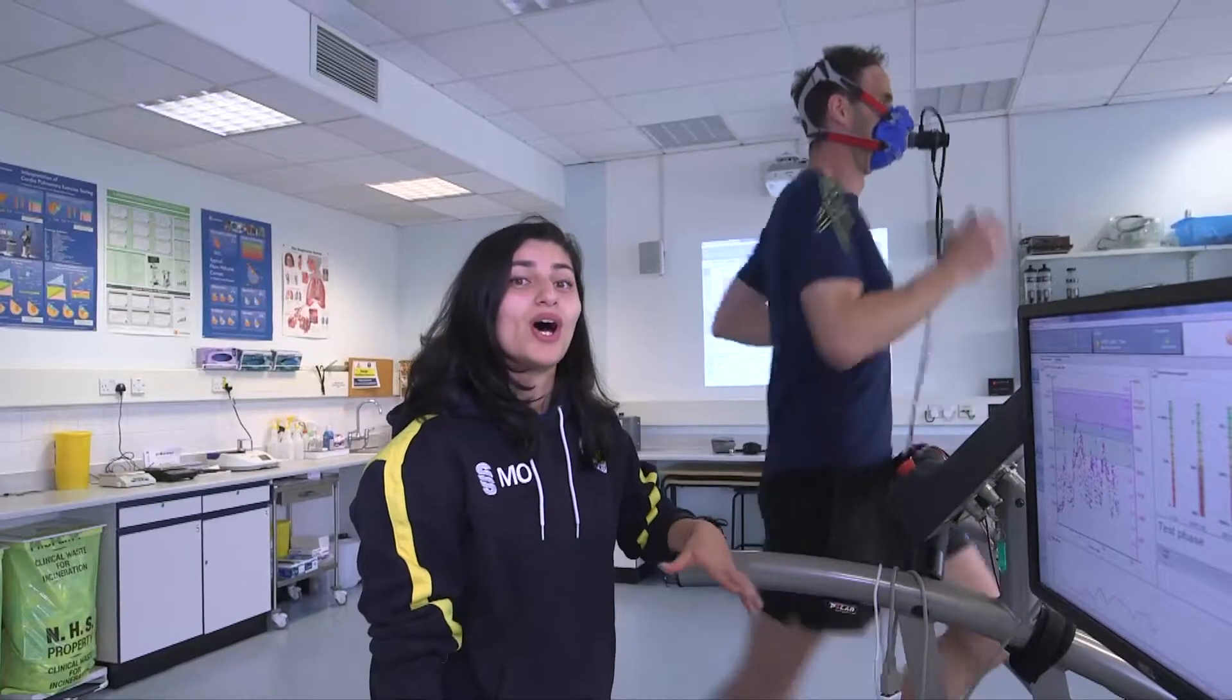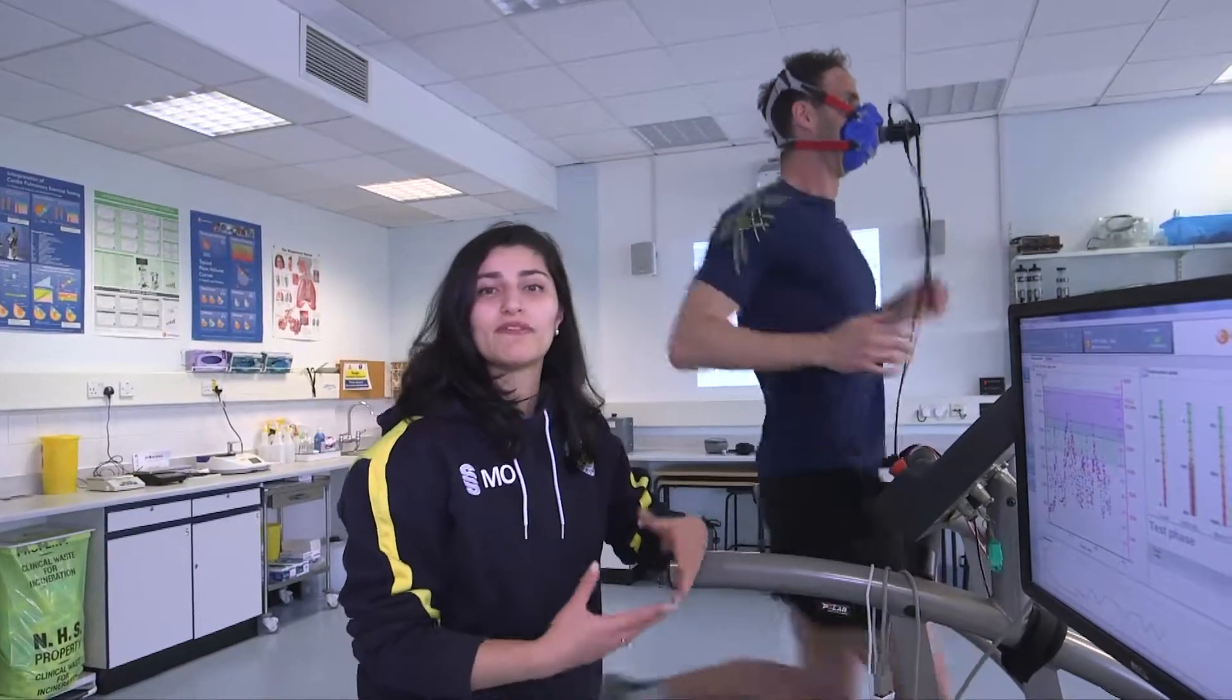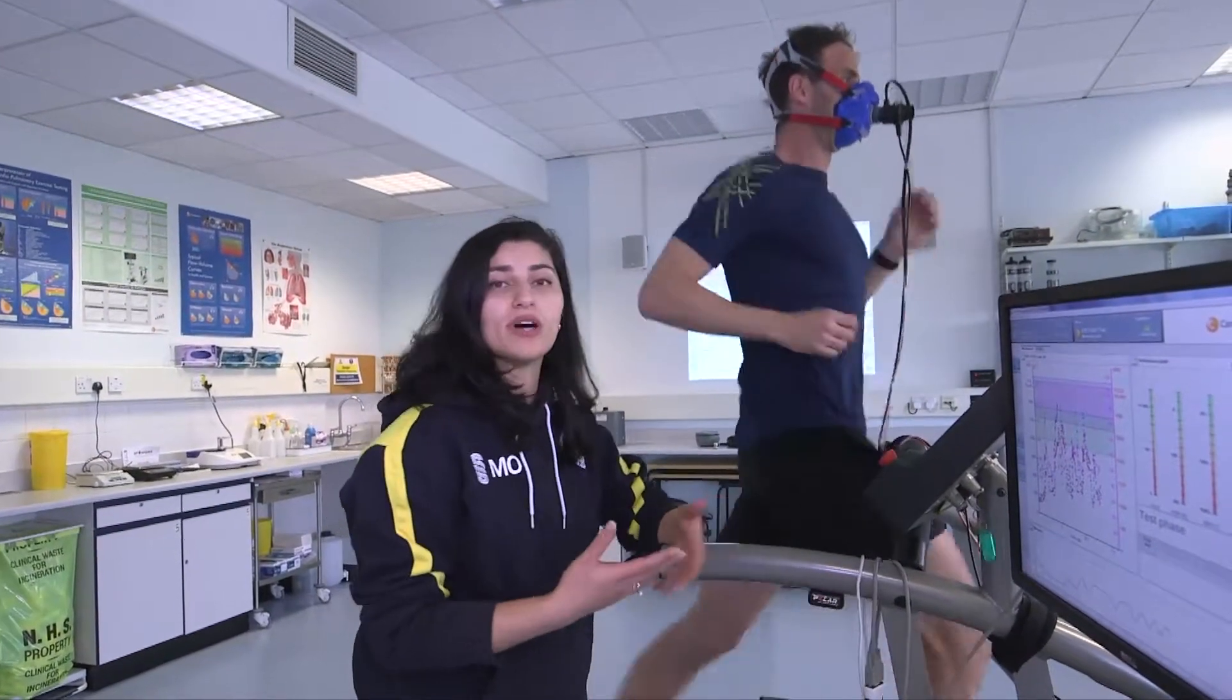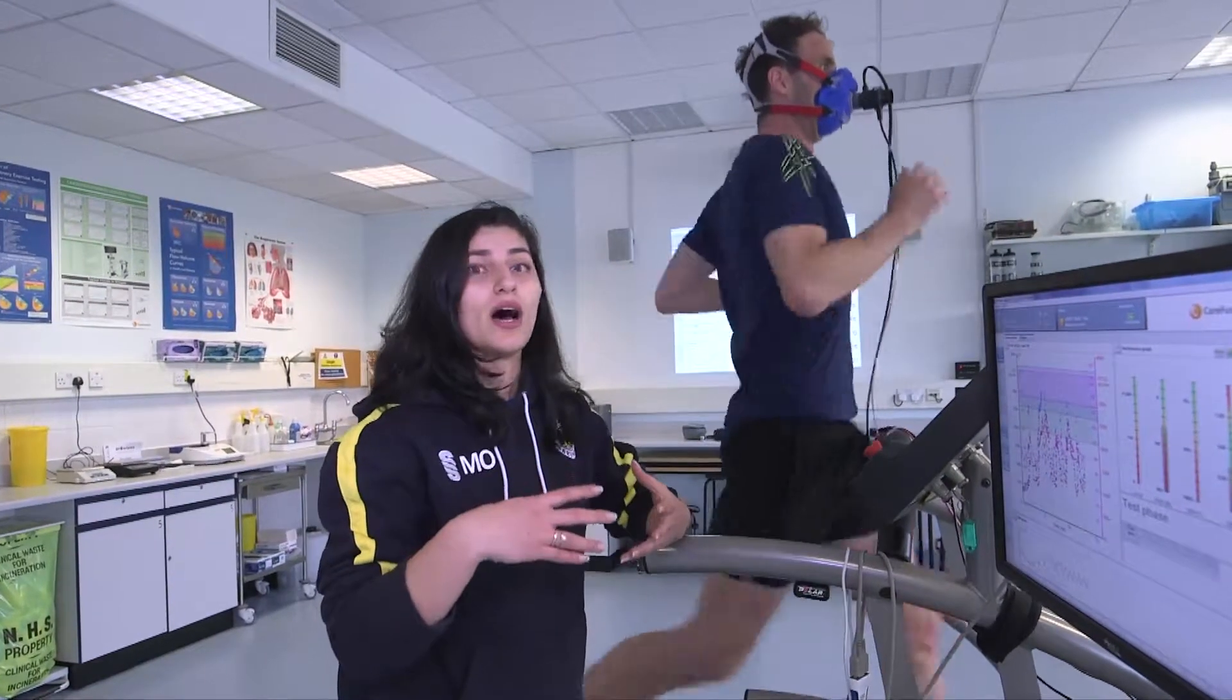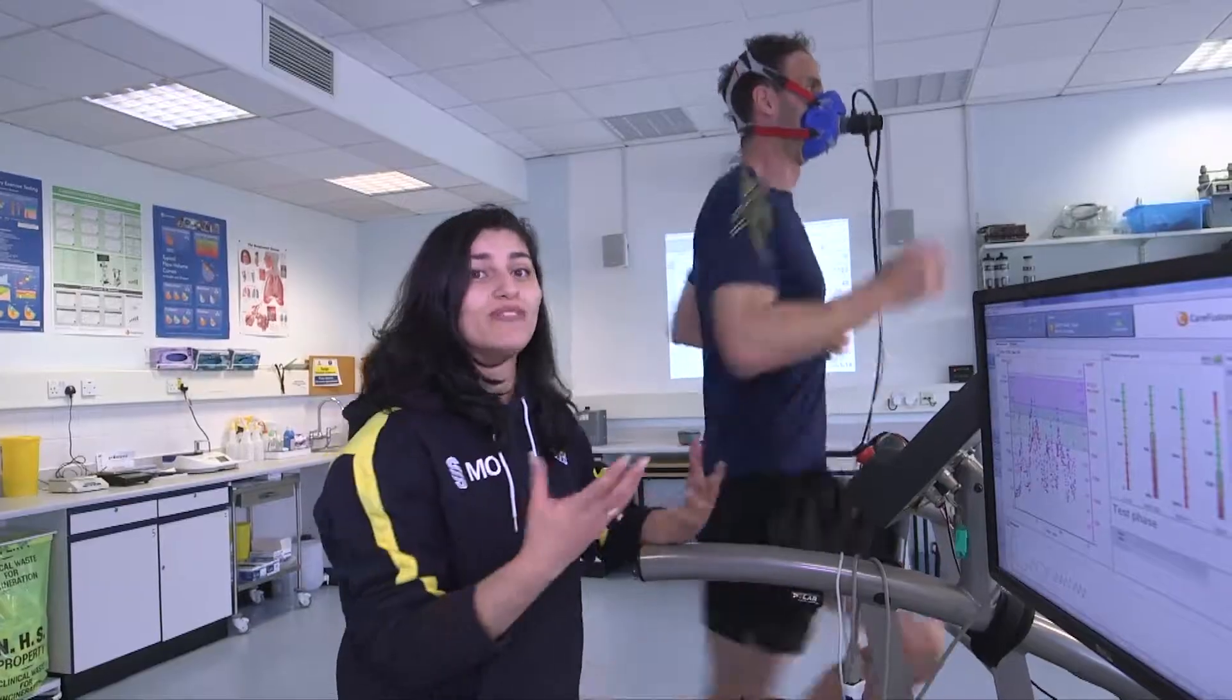We can use the treadmill to assess an athlete in different environmental conditions, especially with the upcoming Tokyo Olympics. We could use this to look at different climates, such as heat or even in the cold.